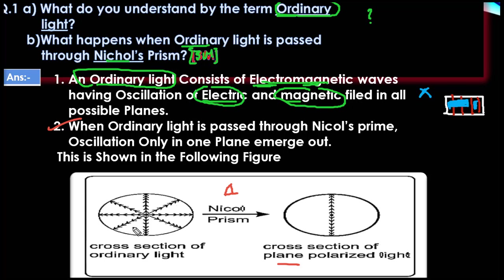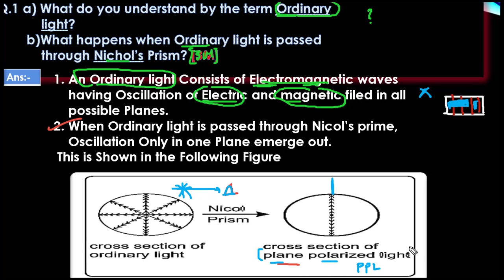Light can be understood as vibrating in all directions. If you want to pass it through a Nicol's prism, then you can pass it through a single plane. The next question is: what is PPL? PPL means plane polarized light.